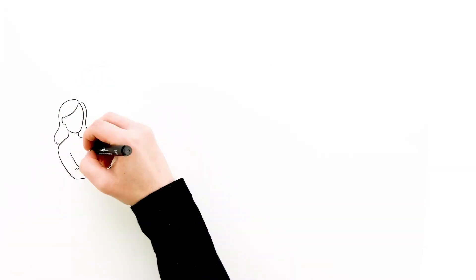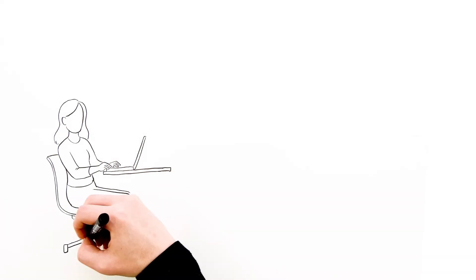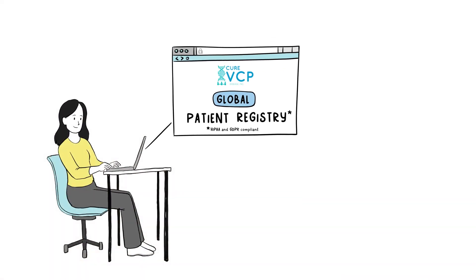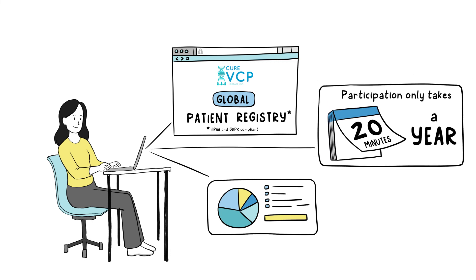Mia's family can help advance treatments by participating in research. One easy but important way to participate is by enrolling in the CURE VCP Disease Global Patient Registry. This registry empowers patients to share valuable disease insights, making the patient voice central to scientific development, and participating only takes 20 minutes each year.